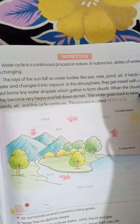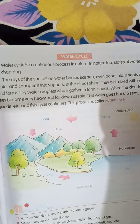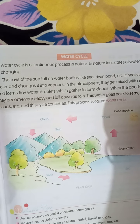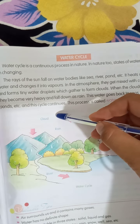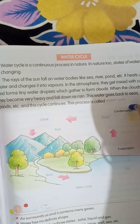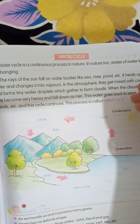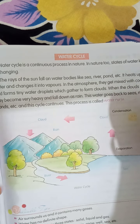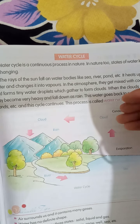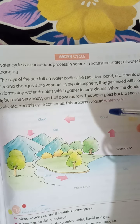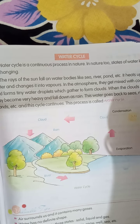This rain water goes back to the sea, river, and ponds, and this cycle continues. This process is called the water cycle.